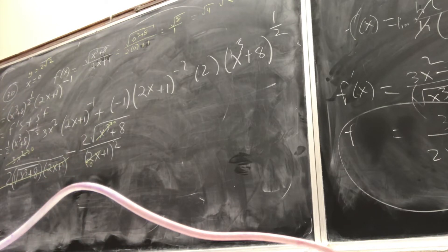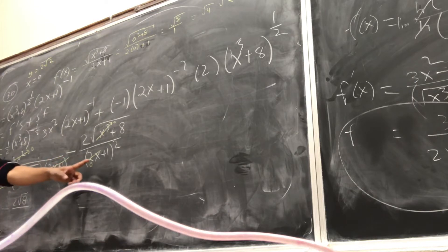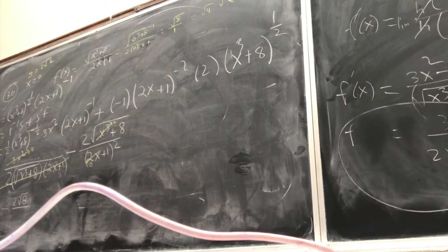So let's see what cancels. This is 0, we agree? So f prime of x is 0 minus, I need help, 2 square root of 8. Is that okay? 2 square root of 8. On the bottom, I have, this guy is 0.